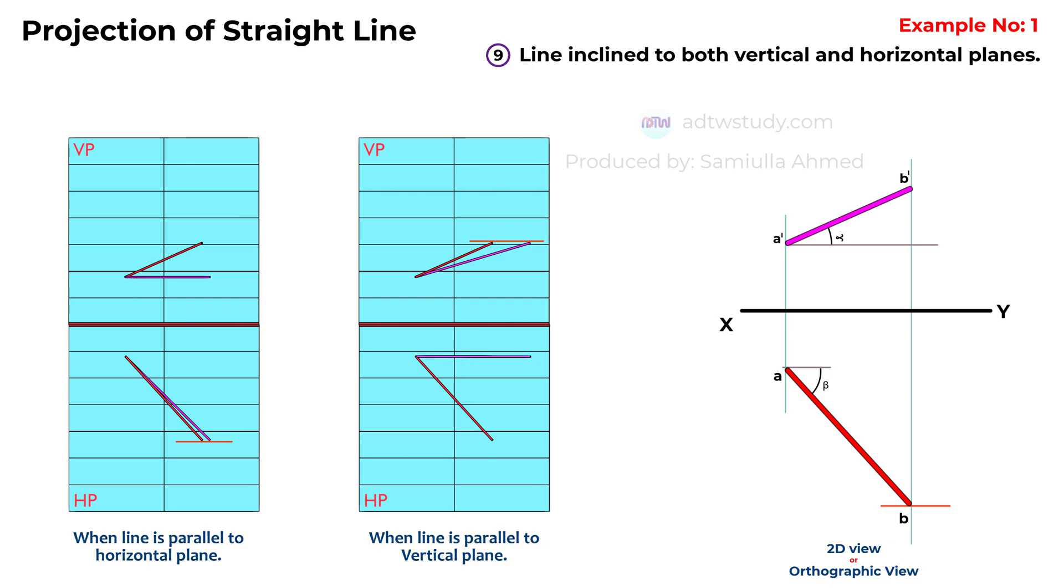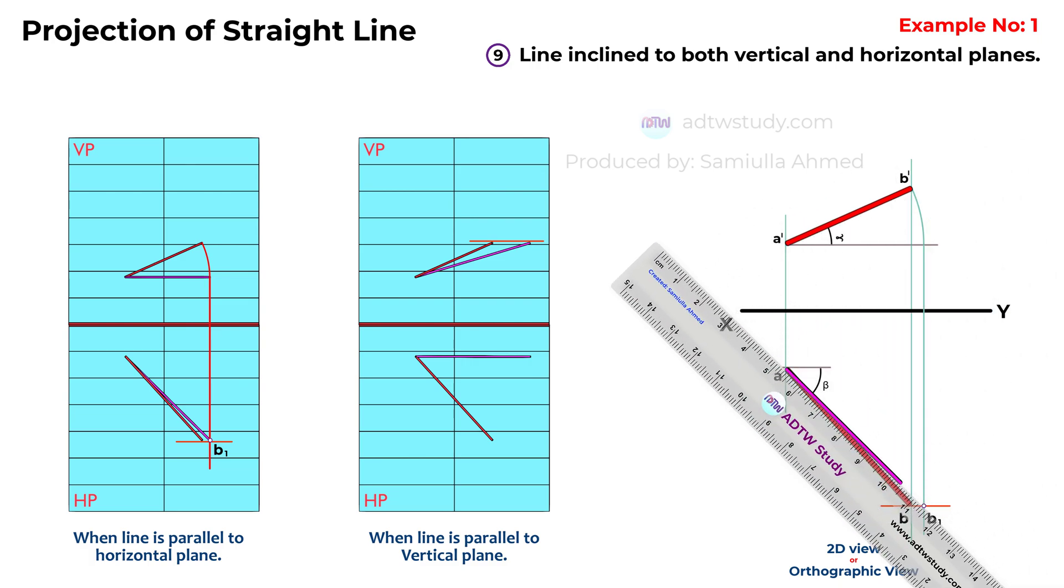Then, use a compass set to the length of the line in the front view and draw an arc. Extend this line downwards to find the new endpoint. Let's call it B1. The intersection point here is the end of our tilted line. Then, draw a line from point A to this new B1 point.